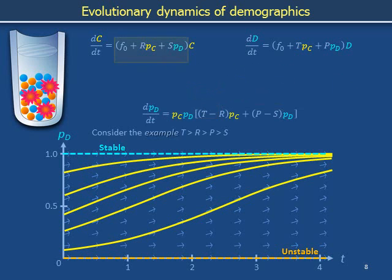It is customary to label the factors in parentheses so-called fitnesses. We regard the fitnesses as variable rate coefficients describing the average efficiencies with which a copper cell, or alternatively a denim cell, increases in number with time. The purpose of this slide is to compare fitnesses of the two subpopulations with each other, as well as to understand how each subpopulation's fitness varies with the demographic composition of the population overall.